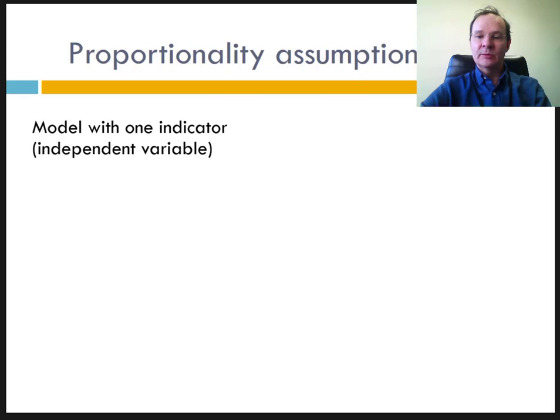One says that the effect of the variables is proportional to the annual probability of knowing the event. This is why the Cox model is called a proportional hazard model. Let's take a very simple example with a single explanatory variable, for example, sex. The variable x is called x1 and the corresponding coefficient b1.